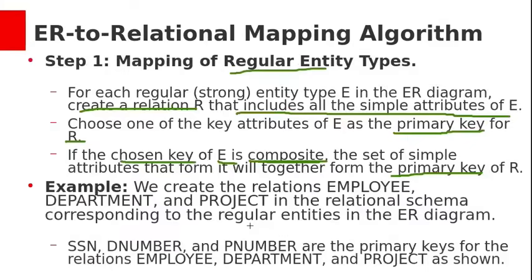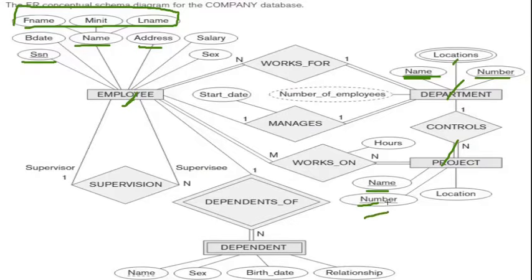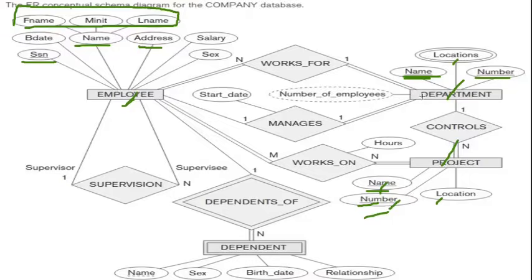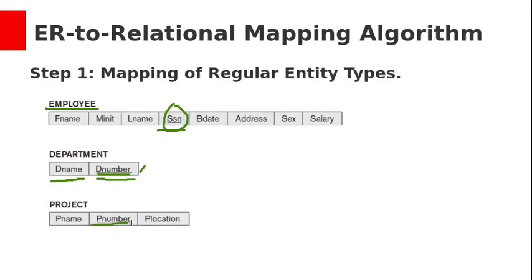For project, we have three attributes: name, number, and location. We create the project table with these three attributes. In the department table, name and number are both key attributes and either can be chosen as primary key. Similarly for project, name and number are key attributes, so we select pnumber as the primary key attribute.